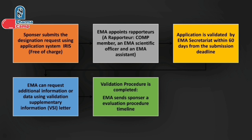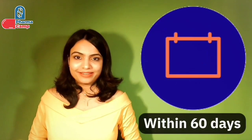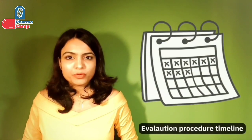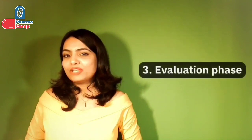Once you submit your application via the IRIS portal by the deadline, EMA appoints a rapporteur and the application enters validation. If there are any questions, EMA will come back to us; otherwise the validation phase closes. The entire validation phase takes 60 days. Once completed, EMA sends the evaluation procedure timeline and the review phase begins — the third step in the process.